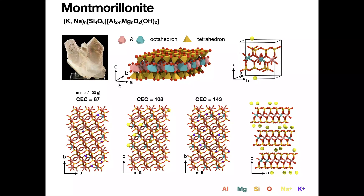This video will demonstrate how to generate a montmorillonite model at a specific cation exchange capacity, or CEC. Montmorillonite is a very soft mineral also known as clay. It can exist at various CEC states depending on the amount of substitution of magnesium for aluminum. The substitution leaves net negative charges, attracting cations to maintain charge neutrality.